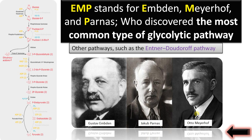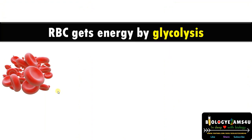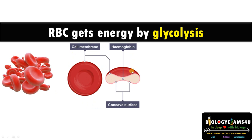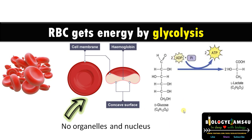Finally, question five: how do RBCs get energy without mitochondria? RBCs — red blood cells — are simply a sac of hemoglobin protein that carries oxygen, meant for gas exchange. In RBCs, organelles are absent and there is no nucleus. RBCs get energy by glycolysis: glucose taken up from the bloodstream is converted to lactate with the release of two ATP. The lactate produced is released into the bloodstream and later removed.